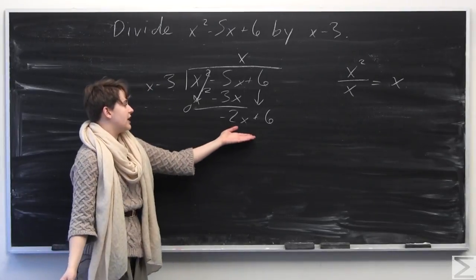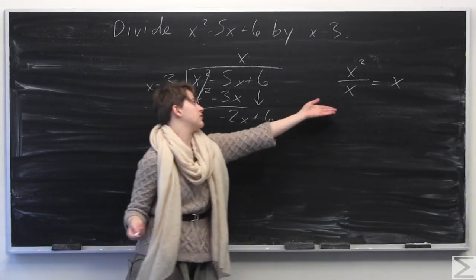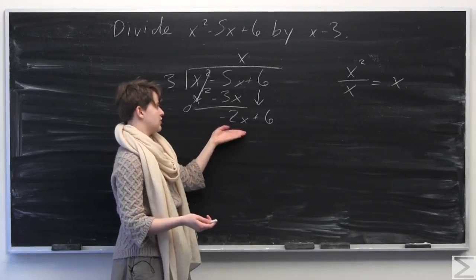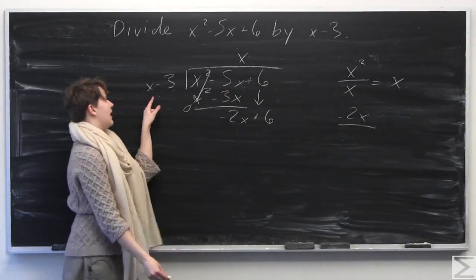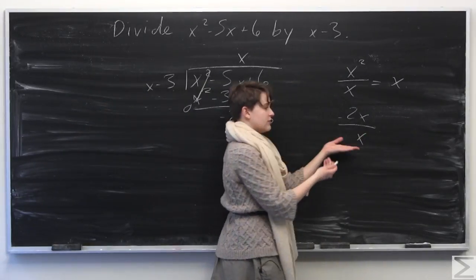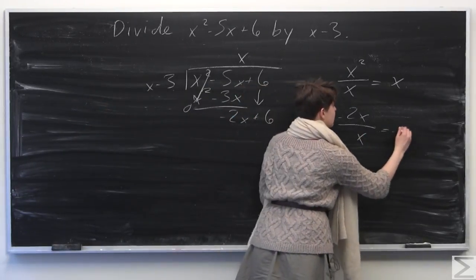Now we have negative 2x plus 6. We take this leading term, negative 2x, and divide it by x to see what we need to multiply by. Negative 2x divided by x is negative 2.